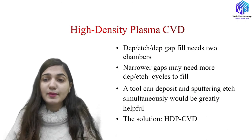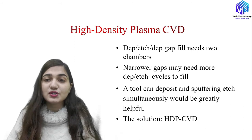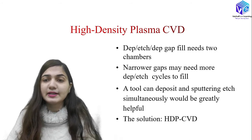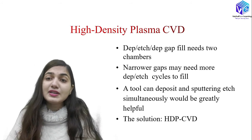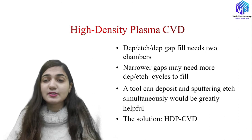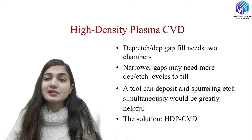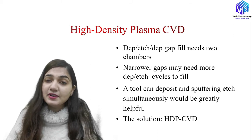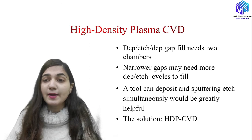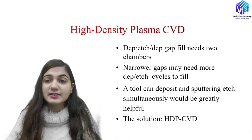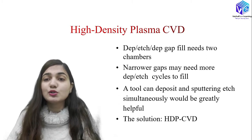The question in your mind is: why are we discussing high density plasma chemical vapor deposition? What is the need of it? We have already talked about a lot of CVD processes and their advantages and disadvantages. We have talked about the dielectric etchback process, in which deposition, etching, and deposition cycles are done for gap filling. For gap filling, we require two separate chambers, and this is a disadvantage. Also, if I have narrower gaps, I would need more and more deposition and etching cycles to fill these gaps.